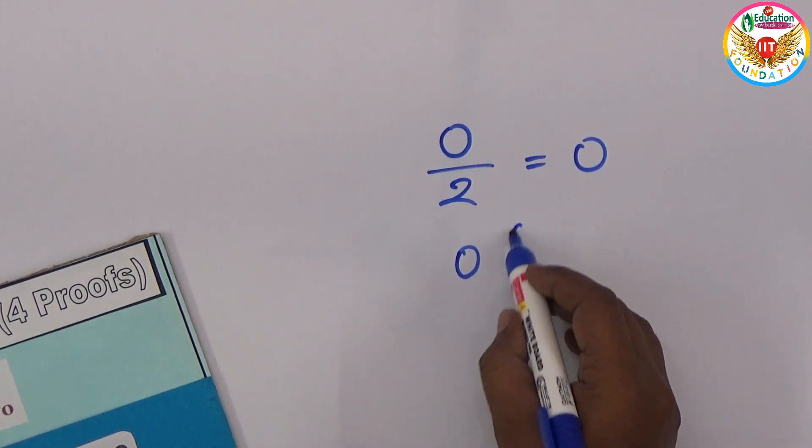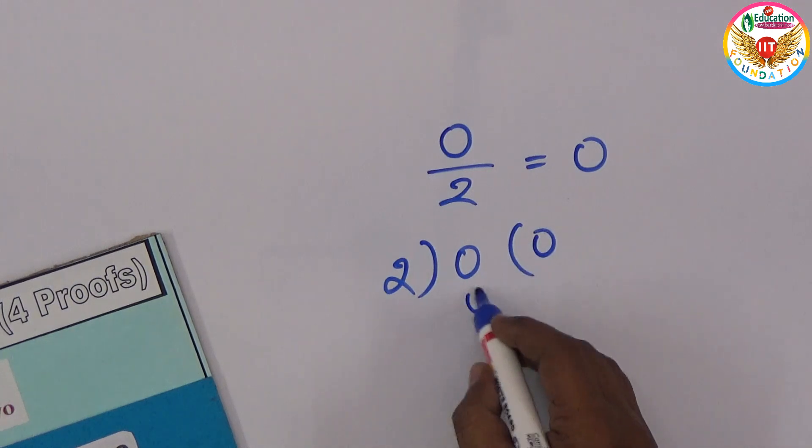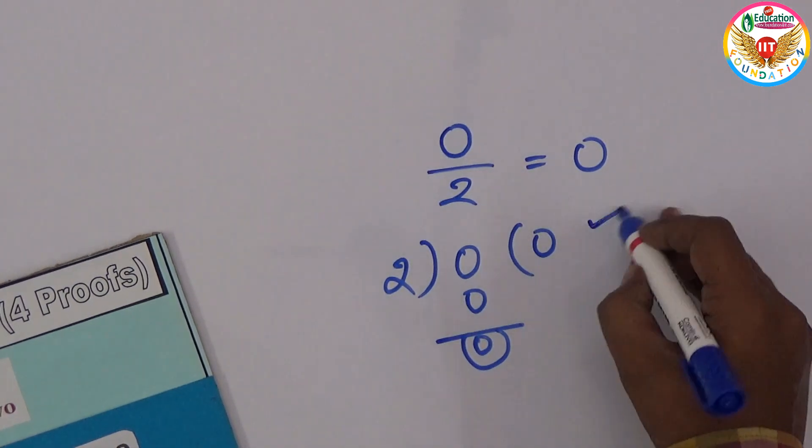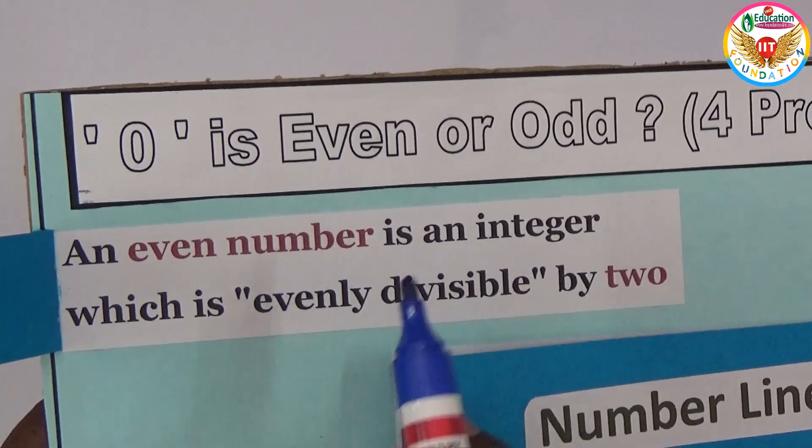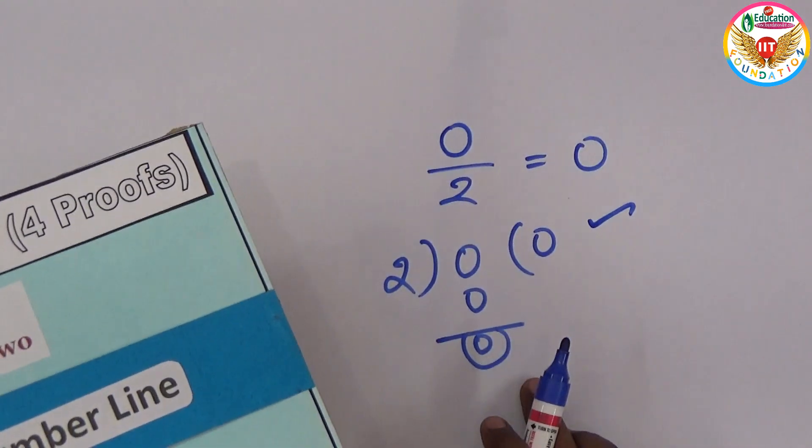Now take zero divided by two. In the two-times table, two times zero is zero. So the remainder is zero itself, directly. This means it's satisfying the even proof. An even number is an integer which is evenly divisible by two. It's perfectly divisible because the remainder is zero.